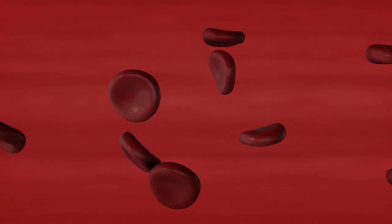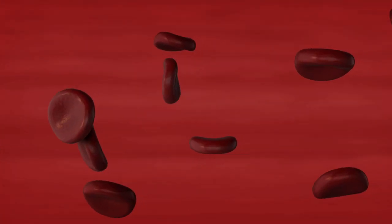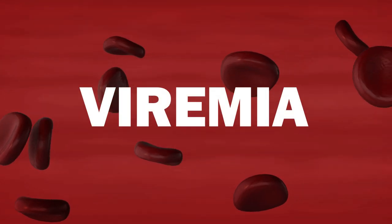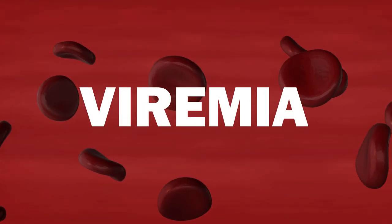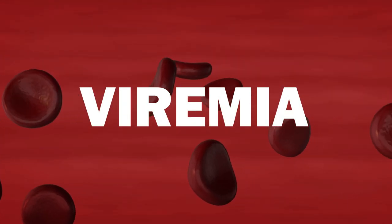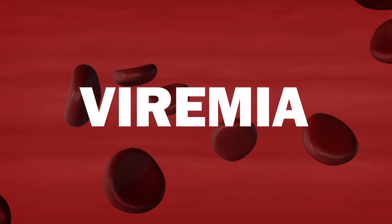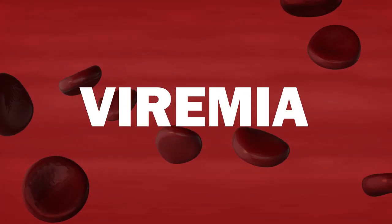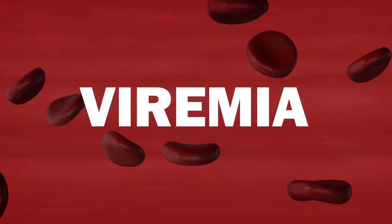During the incubation period, the virus first replicates locally, then spreads to the bloodstream. During this viremia — in other words, the presence of viruses in the bloodstream — blood-derived monocytes become infected.